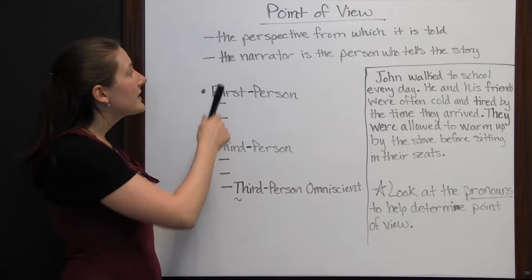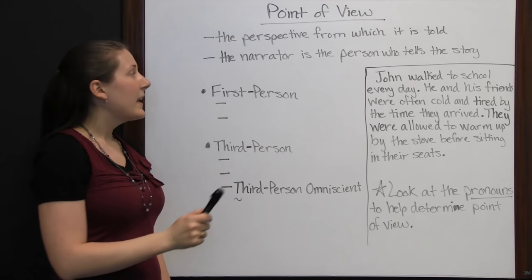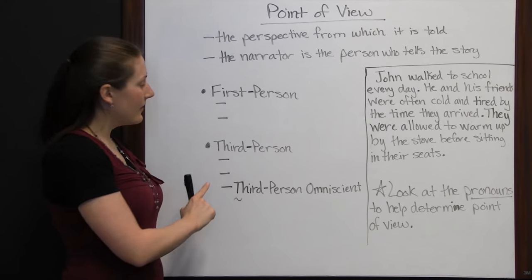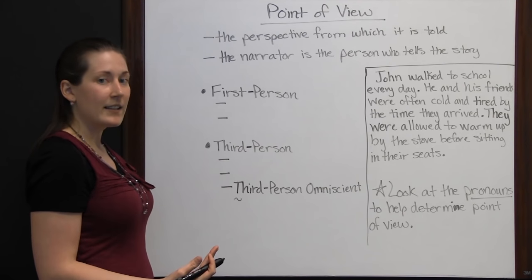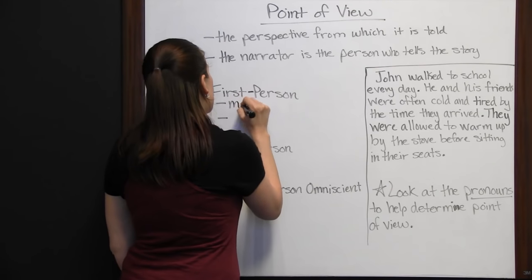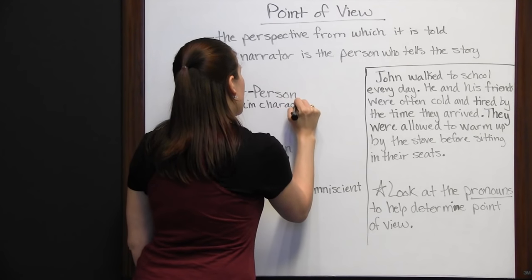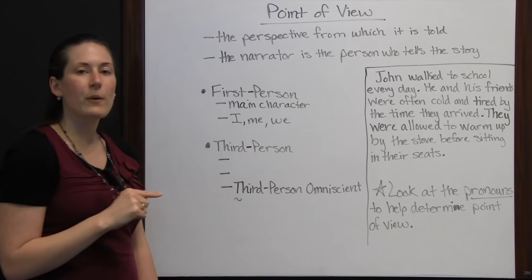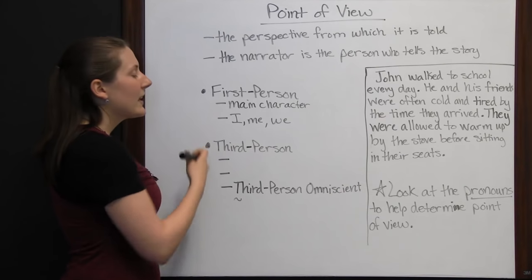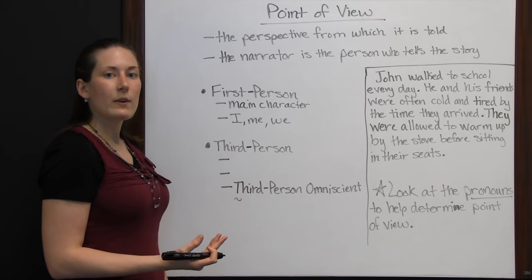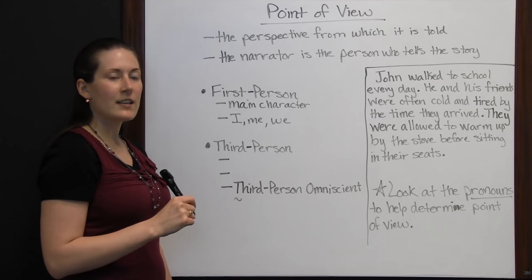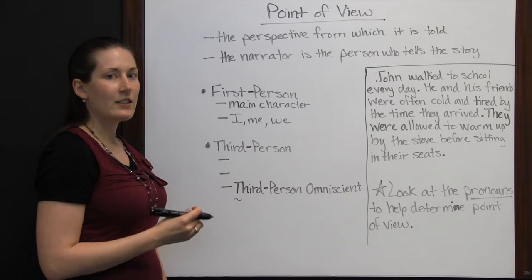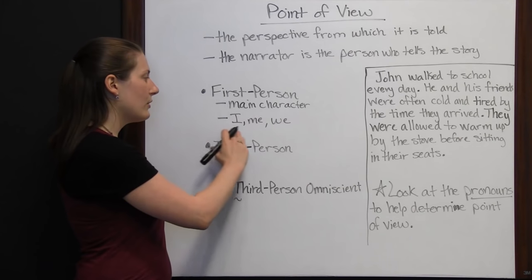Point of view is the perspective from which a story is told. The narrator is the person who tells the story. When looking for point of view, we're looking to see if we have a first person narrator or a third person narrator. In first person, your narrator is your main character, and they'll use pronouns like I, me, and we. Since it's the main character, you only get to know what that character knows and experiences — you won't know about anything that doesn't involve the main character.